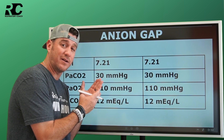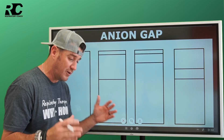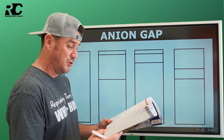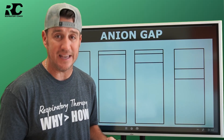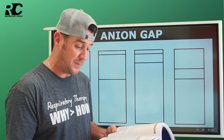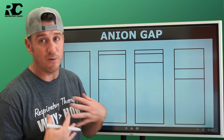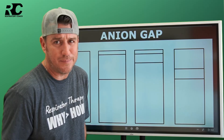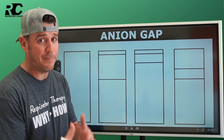Let's talk about the anion gap. Going to Egan's Chapter 14, 13th edition, page 295 — Egan's states it is important to identify the underlying cause when a metabolic acidosis presents. Analysis of plasma electrolytes helps distinguish between the two types of metabolic acidosis; specifically, measuring the anion gap helps make that distinction. As respiratory therapists, we may not look at electrolytes as often as we should, but this example will show you why it becomes very important.